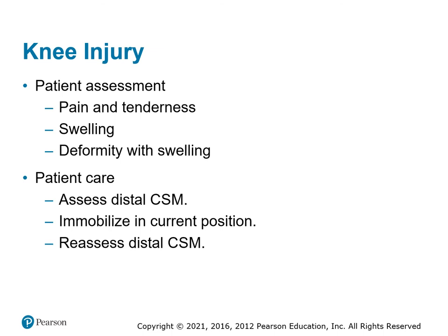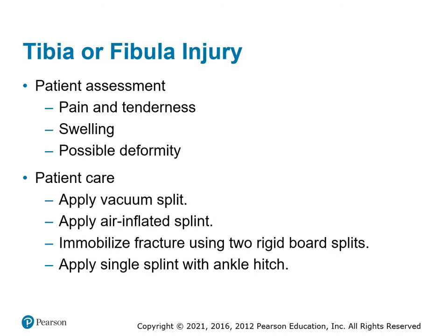Knee injuries: pain, tenderness, swelling, deformities — something's wrong with the knee. You can't tell whether it's dislocated, a torn ligament, or torn meniscus. Assess CSM, immobilize it the way it is, and then assess CSM again. Immobilizing the knee can be done multiple ways. For tibia-fibula injuries: pain, tenderness, swelling, possible deformity — apply the vacuum splint, air-inflated splint, or two padded boards. Use a figure-eight system around the ankle. There are lots of options to immobilize the lower extremity — one board on either side from the knee to the ankle, or also the option of a pillow.